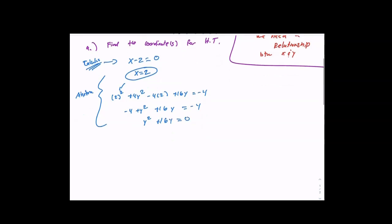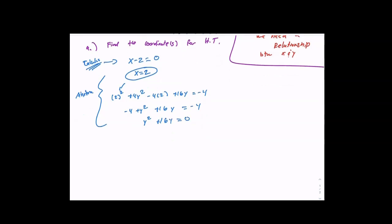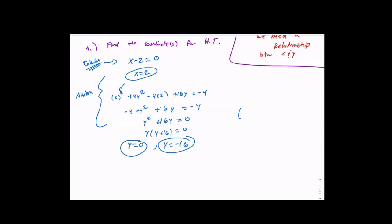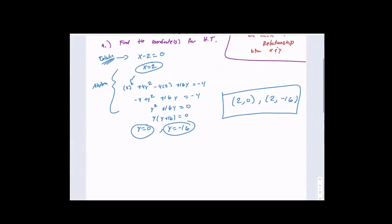So we have 4y² + 16y = 0. Factor out y: y(y + 16) = 0, giving y = 0 and y = -16. So our answers are the coordinates (2, 0) and (2, -16). That is based on review of what we did yesterday.